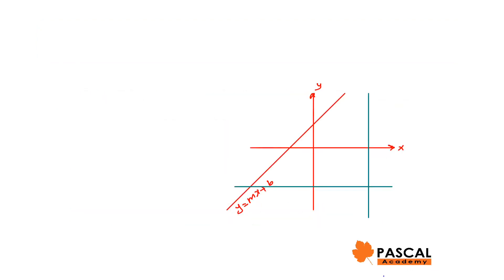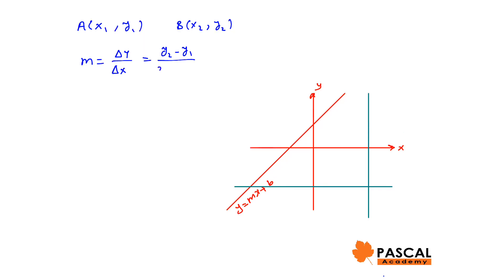The slope of the line passing through points A (x1, y1) and B (x2, y2) is delta y over delta x, which is y2 minus y1 divided by x2 minus x1, rise over run, when x2 and x1 are not equal. When x1 and x2 are equal, m is undefined.